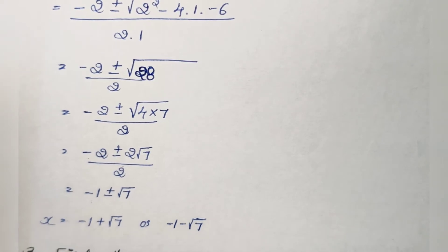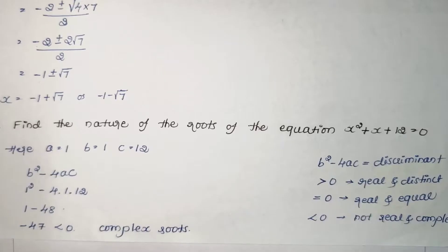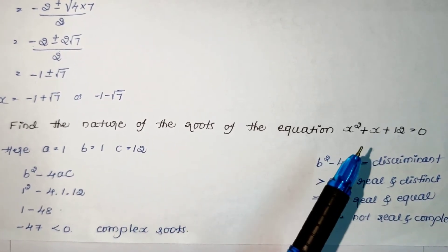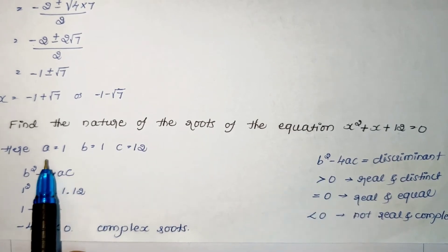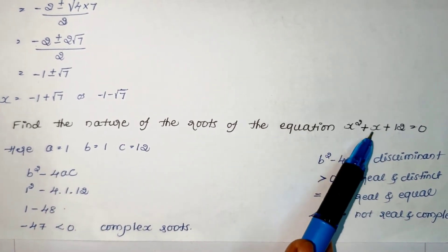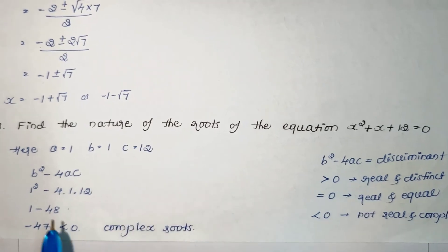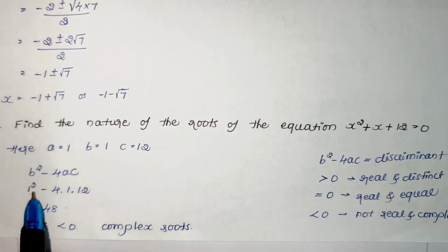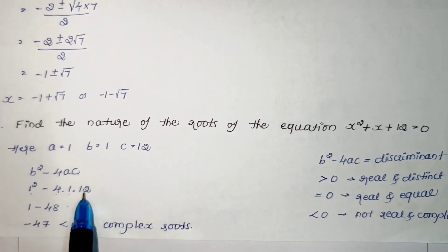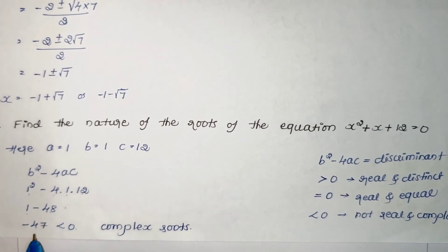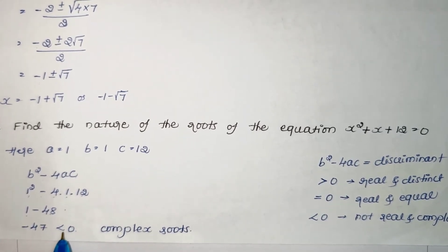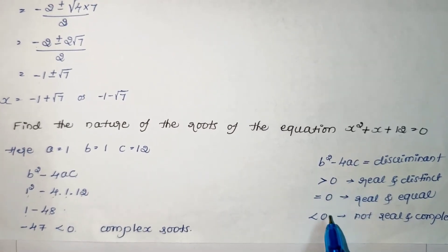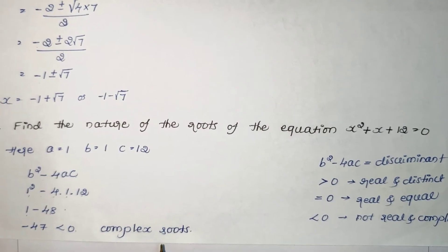Next, find the nature of the roots of x² + x + 12 = 0. Here a = 1, b = 1, c = 12. The discriminant is b² − 4ac = 1² − 4(1)(12) = 1 − 48 = −47, which is less than zero. Therefore this equation has no real roots — it has imaginary or complex roots.